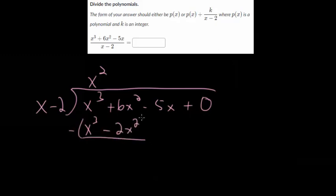We subtract to find that remainder. And as always, the first term should cancel out x cubed minus x cubed is zero. And we get 6x squared minus negative 2x squared. So we're adding 2x squared, we get 8x squared.